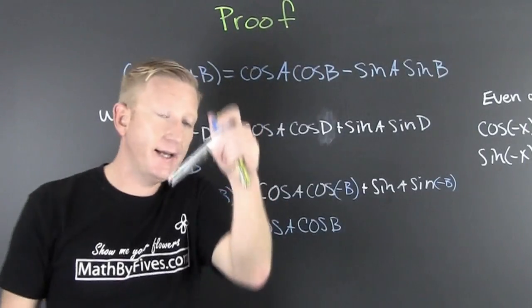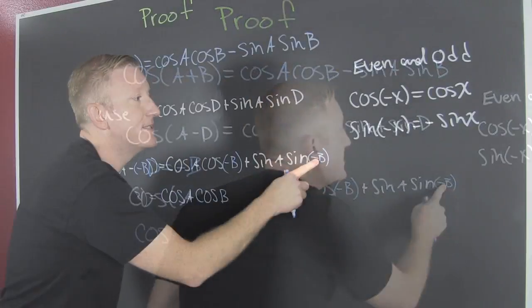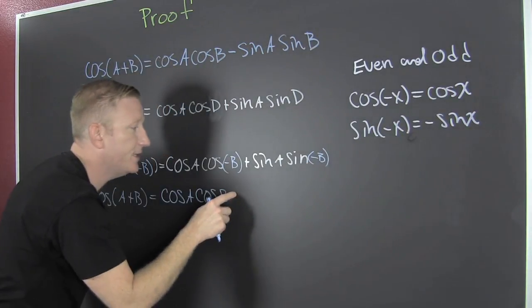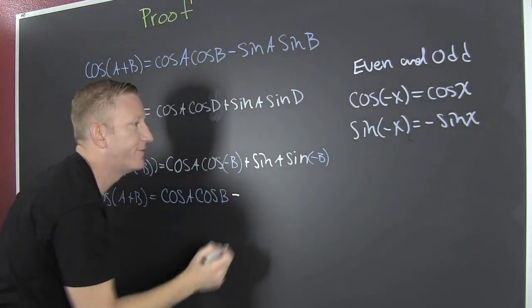Now, the sine of minus B is the same as minus the sine of B. So we change that sine out there. And that's the difference.